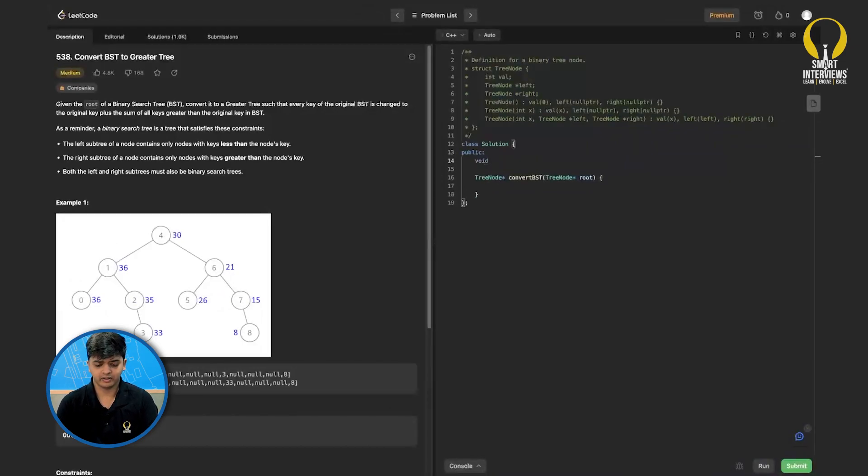So first, we have to write the reverse in-order function. I have void reverse in-order which will take the node root. Let's try to write the main logic first. First, I have to perform the reverse in-order on root dot right.